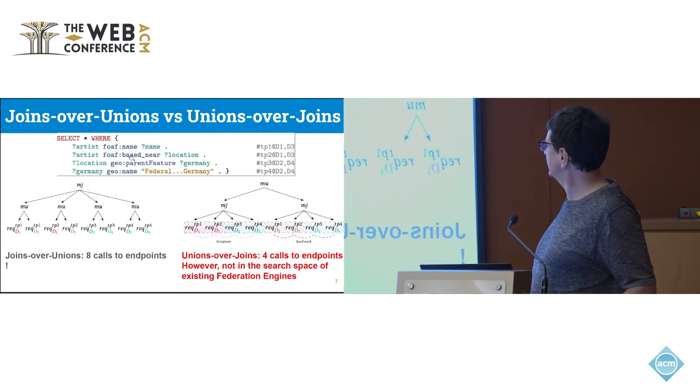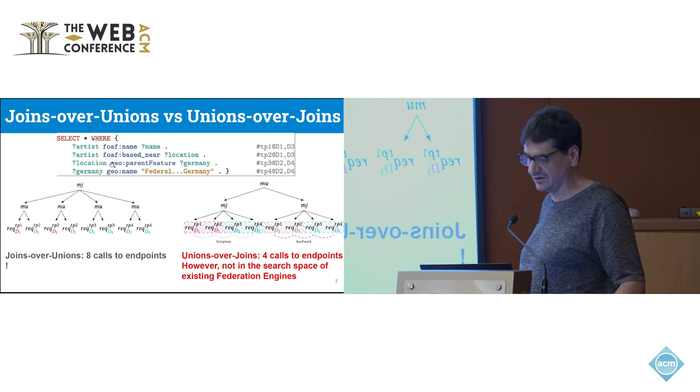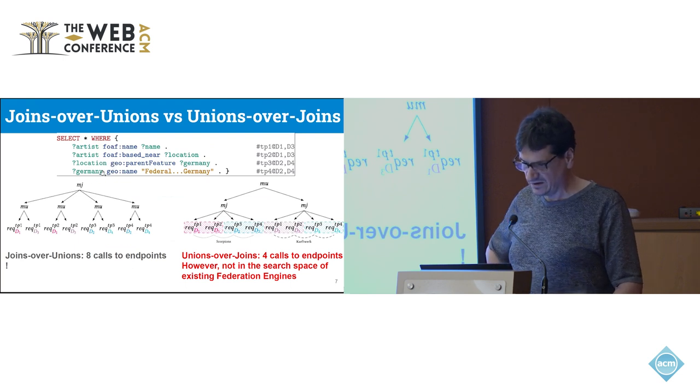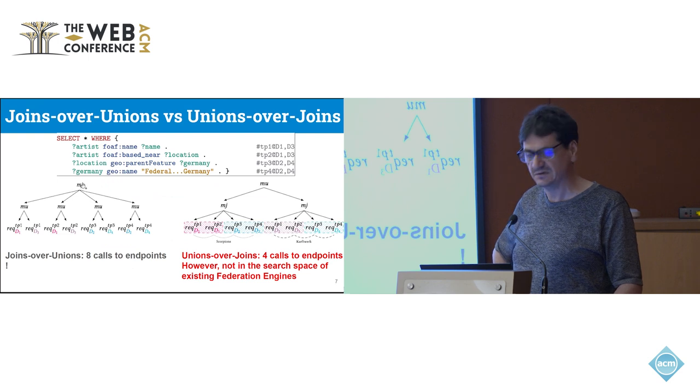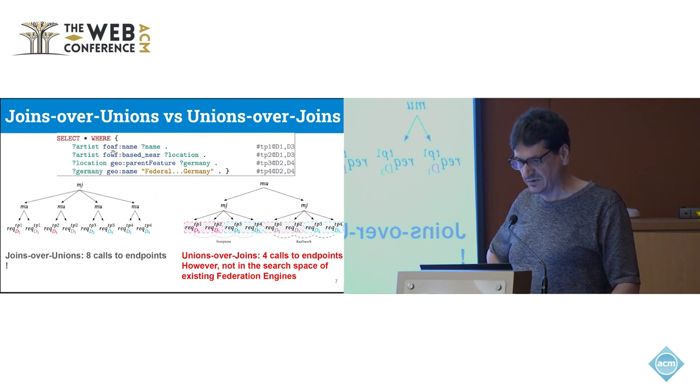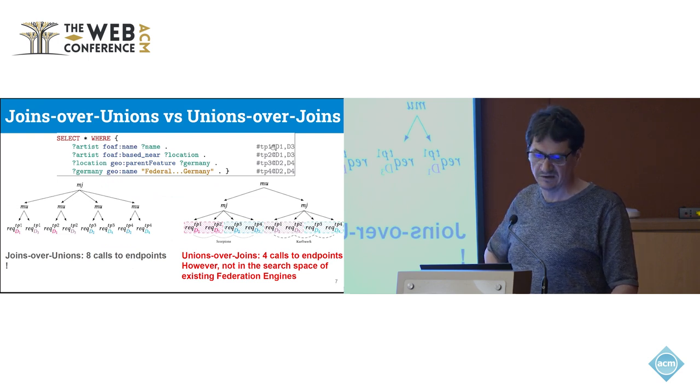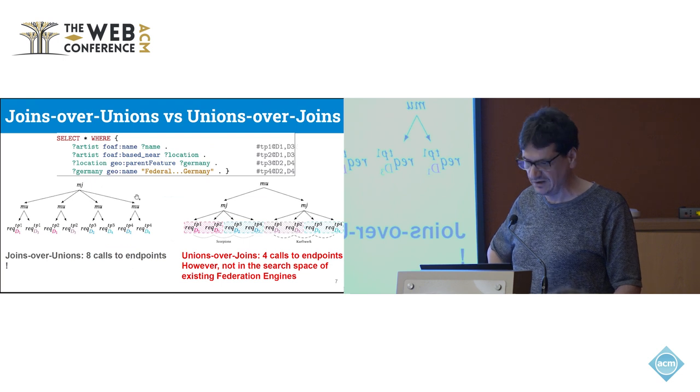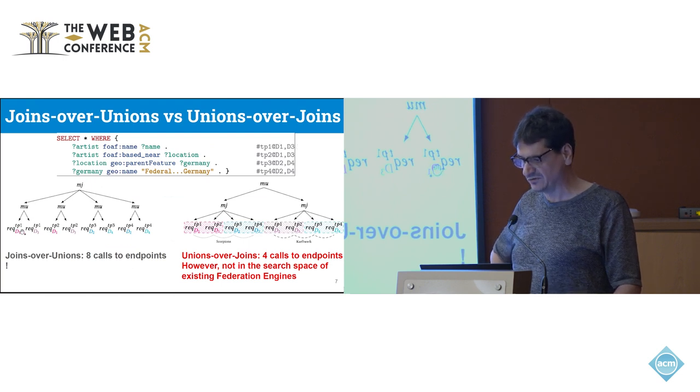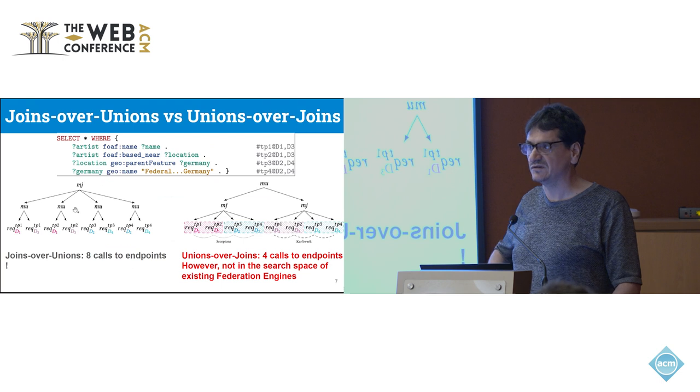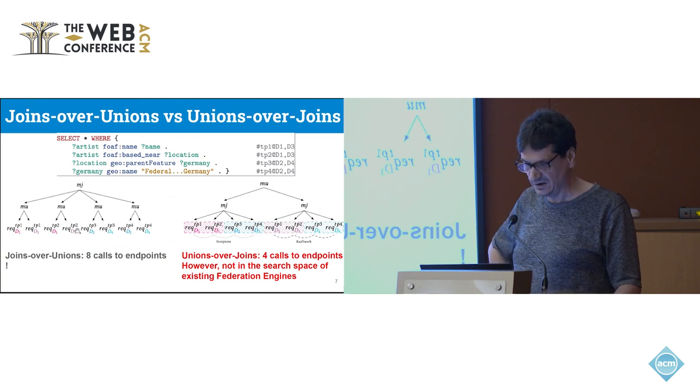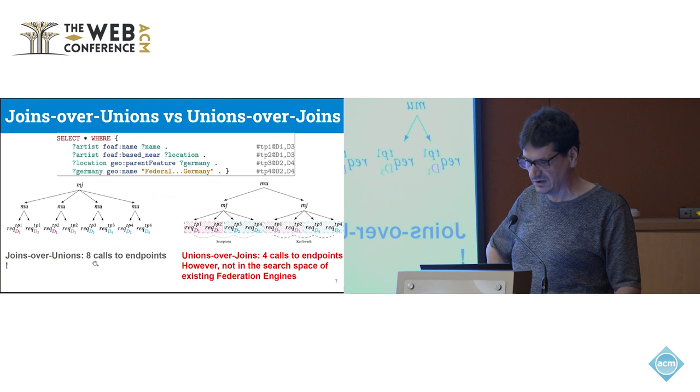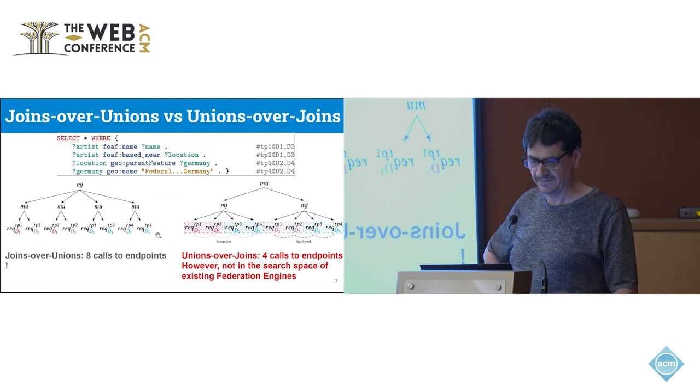When you process this query with current federated engines, you have a multi-join at the top of the query plan. And because, for example, the first triple pattern has to be executed on D1 and D3, you have a union of TP1 on D1 and D3. This is the basic way to execute this query. It's fully correct. But when you execute this query, you will make eight calls to the endpoints.